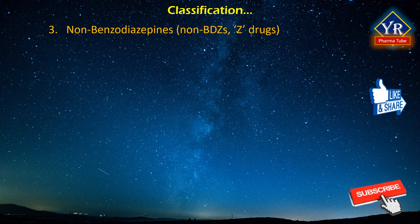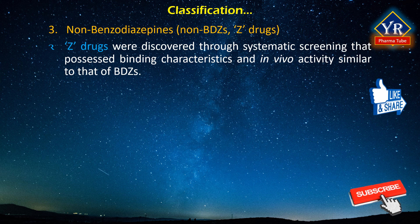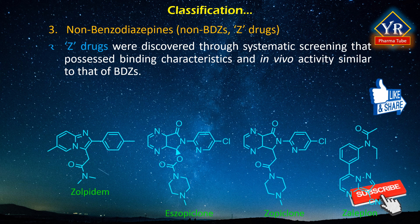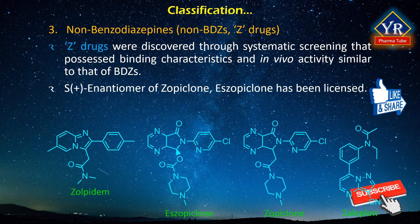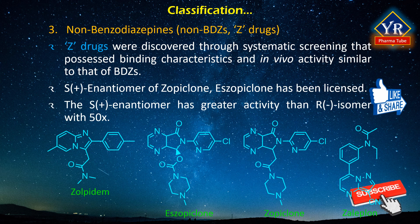The third class of sedative-hypnotics are non-benzodiazepines — the so-called Z-drugs. Zopiclone, zolpidem, and zaleplon were discovered through systematic screening of molecules that possessed binding characteristics and in vivo activity similar to that of benzodiazepines. These three drugs are non-benzodiazepine drugs, as can be seen from their structural chemical characteristics. More recently, the S-plus enantiomer of zopiclone — eszopiclone — has been licensed. The S-plus enantiomer is reported to have greater activity than the R-minus enantiomer, with a 50-fold higher affinity for the GABA-A receptor, and is also suggested to be superior in terms of its side-effects profile.